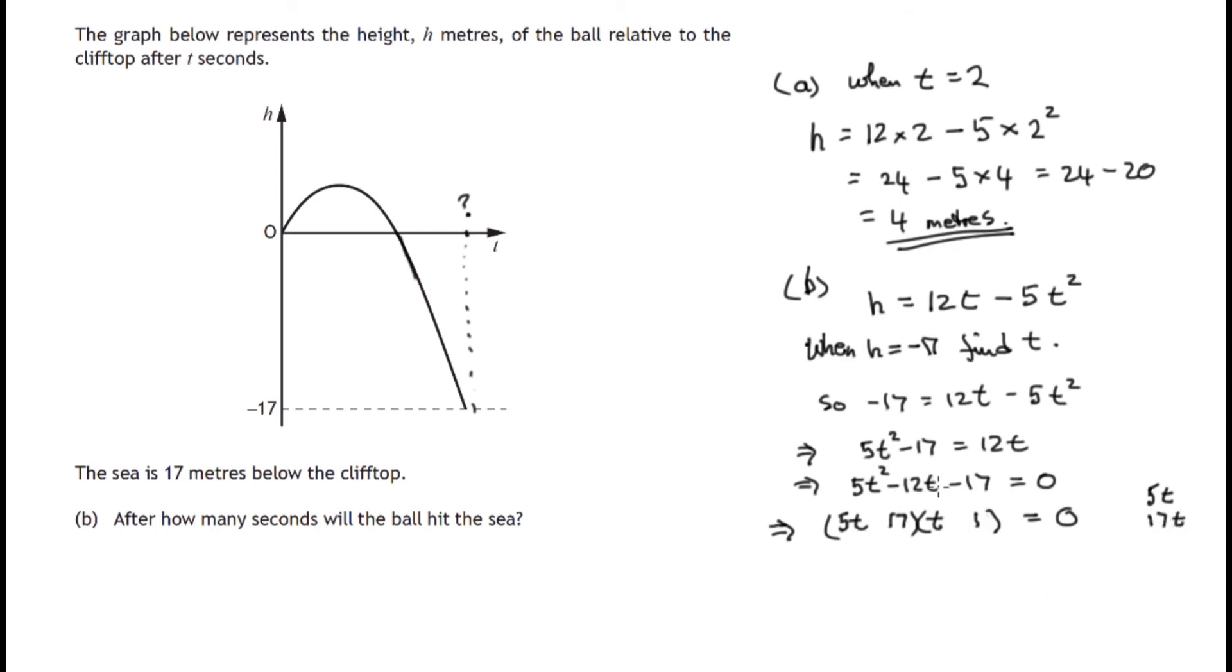And we're attempting to combine these in some way to get this middle term, negative 12t. You can see that if we take 5t and subtract 17t, we'd end up with negative 12t.